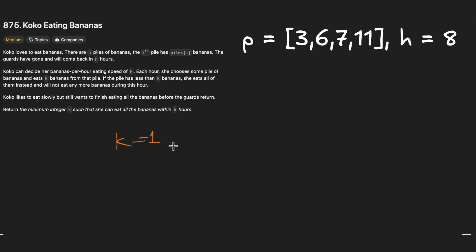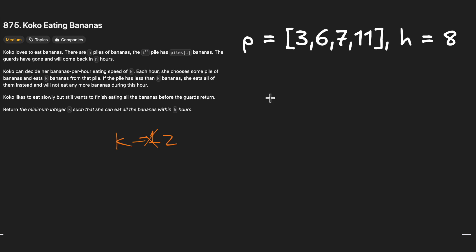With k=1, eating three bananas takes three hours, leaving five hours for the rest. For the six-banana pile, we'd need six hours — but we only have five left. So k=1 is not a good option; we cannot finish all piles within the hour limit. Let's check k=2.